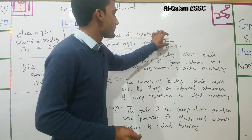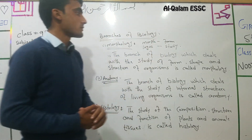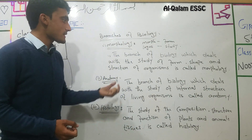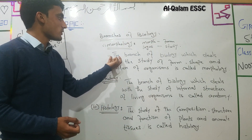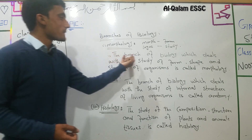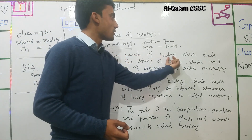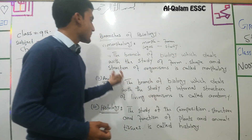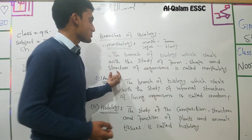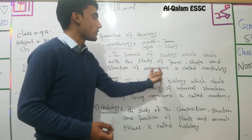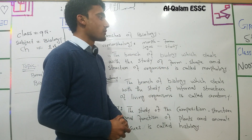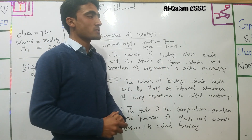Morpho means form and logos means study. So we can simply define Morphology as the branch of biology which deals with the study of form, shape, and structure of organisms. It is called morphology.